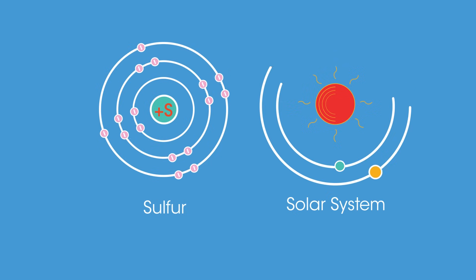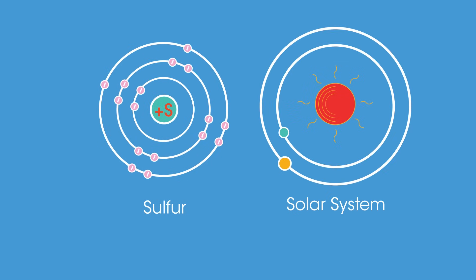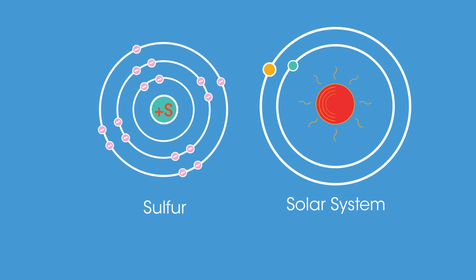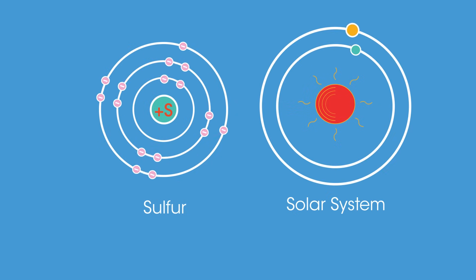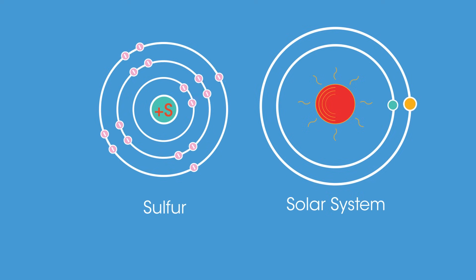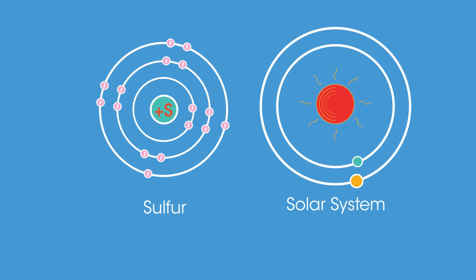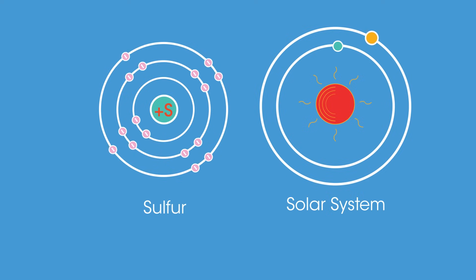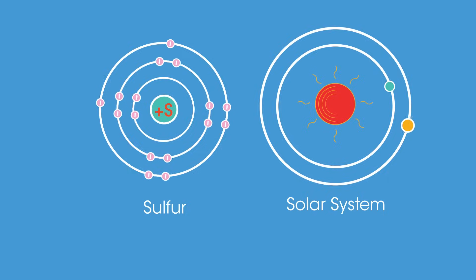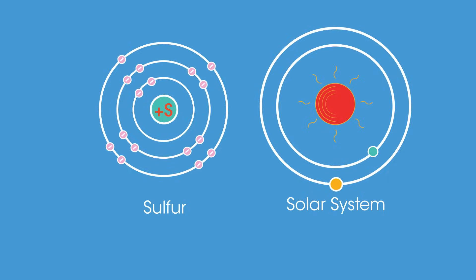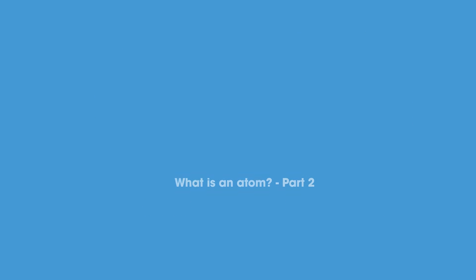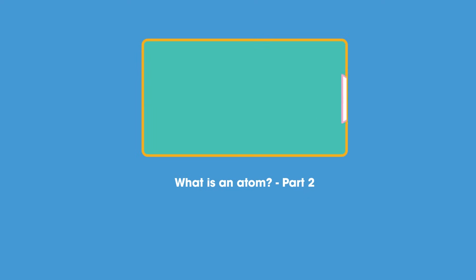In other words, electrons orbit the nucleus similar to how planets orbit the sun. However, electrons can only orbit at specific distances and with specific energies. We will look at the differences in structure of atoms of different elements and the periodic table in another video.